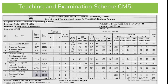We will start with the first topic: the teaching and examination scheme of the fifth semester. As we know, for the fifth semester we have five theory papers. Four theory papers are compulsory while one elective we have to choose among three. In this way, we have 500 marks allocated for theory while 400 marks are allocated for practical, making our fifth semester cover 900 marks.